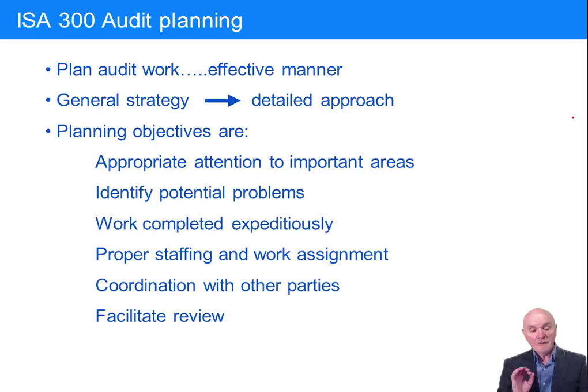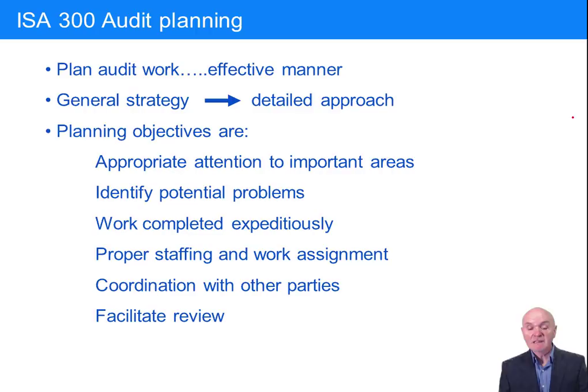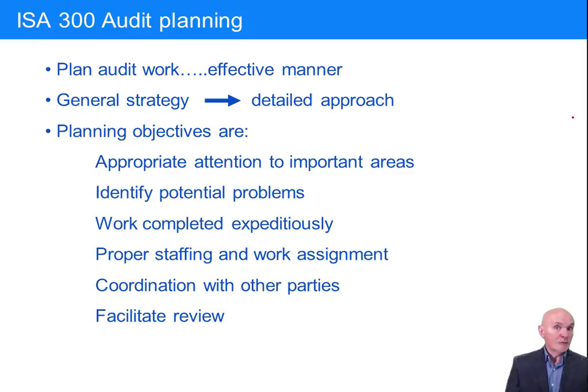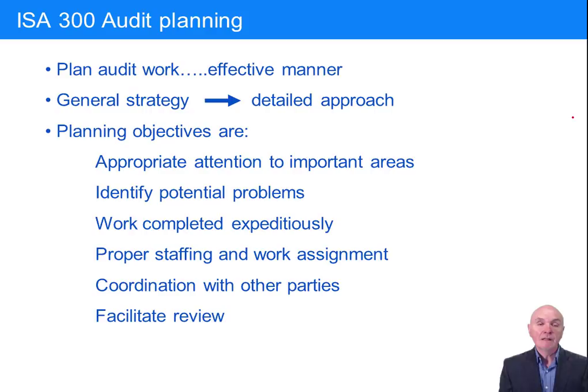Here we have the planning objectives — this is quite an important list you really ought to learn. First: appropriate attention is given to important areas. One way of identifying these is the big figures in the financial statements. If there's a very small figure, the chance of a material misstatement is fairly small. But if you have a very large amount of inventory, receivables, or payables, a small percentage change in that big figure could give a big percentage change in the profits.